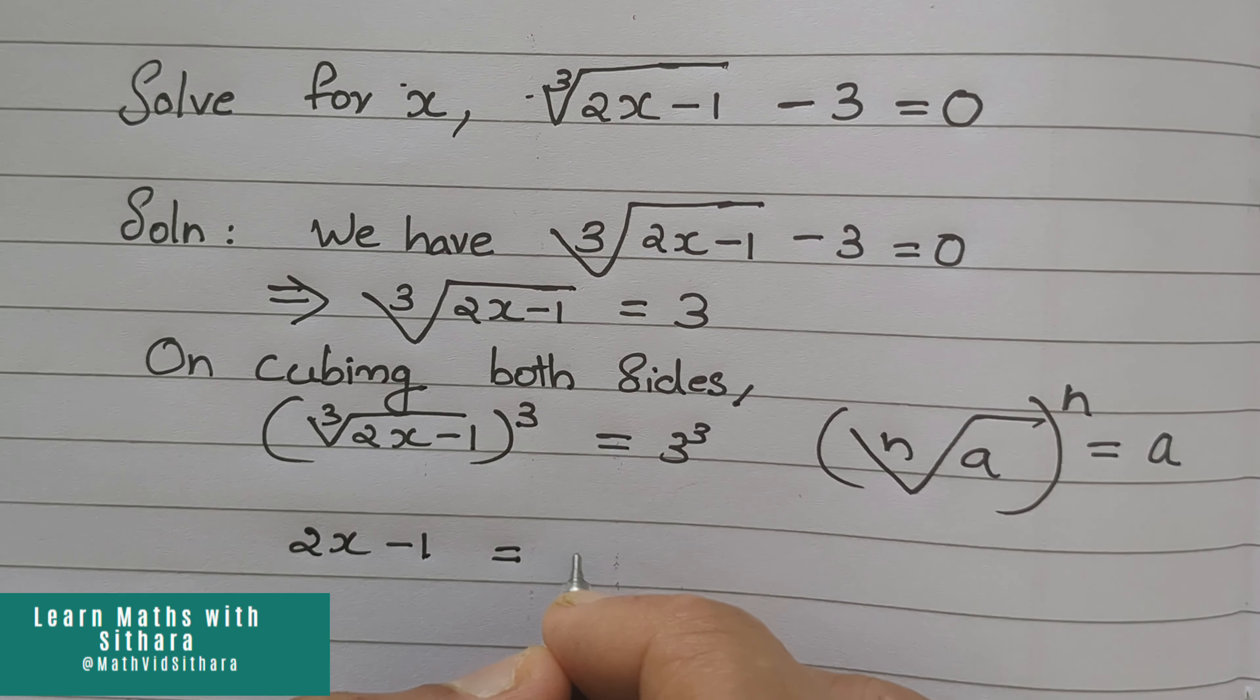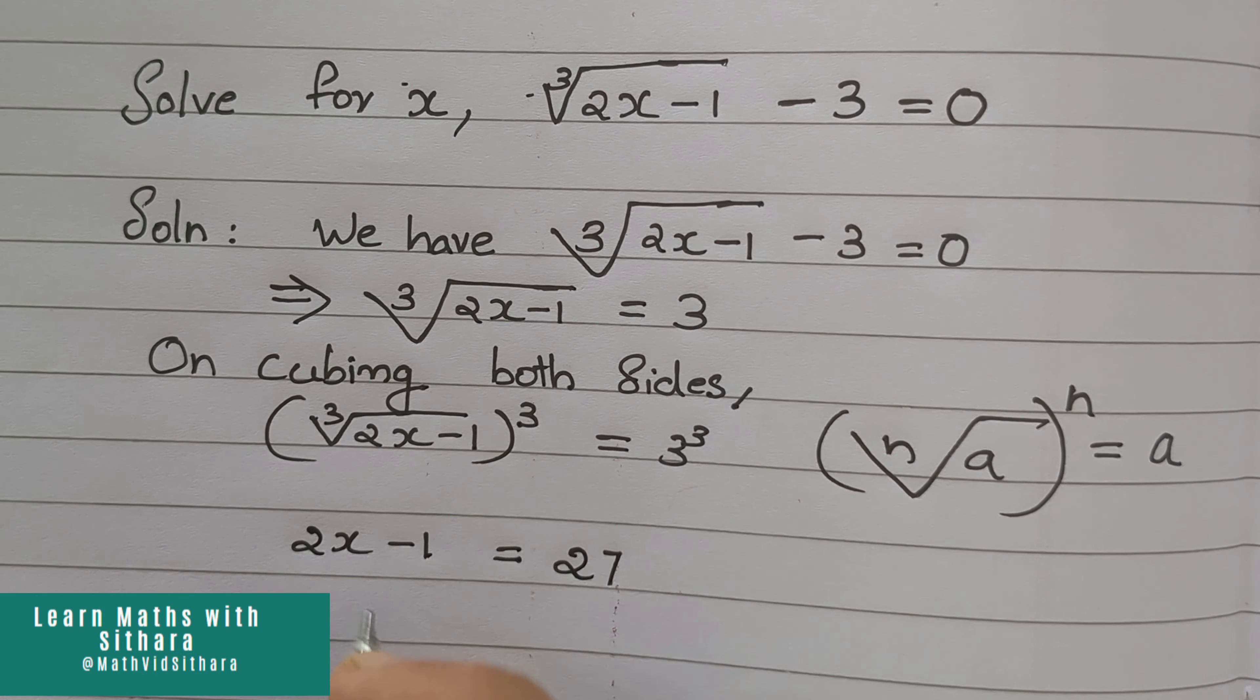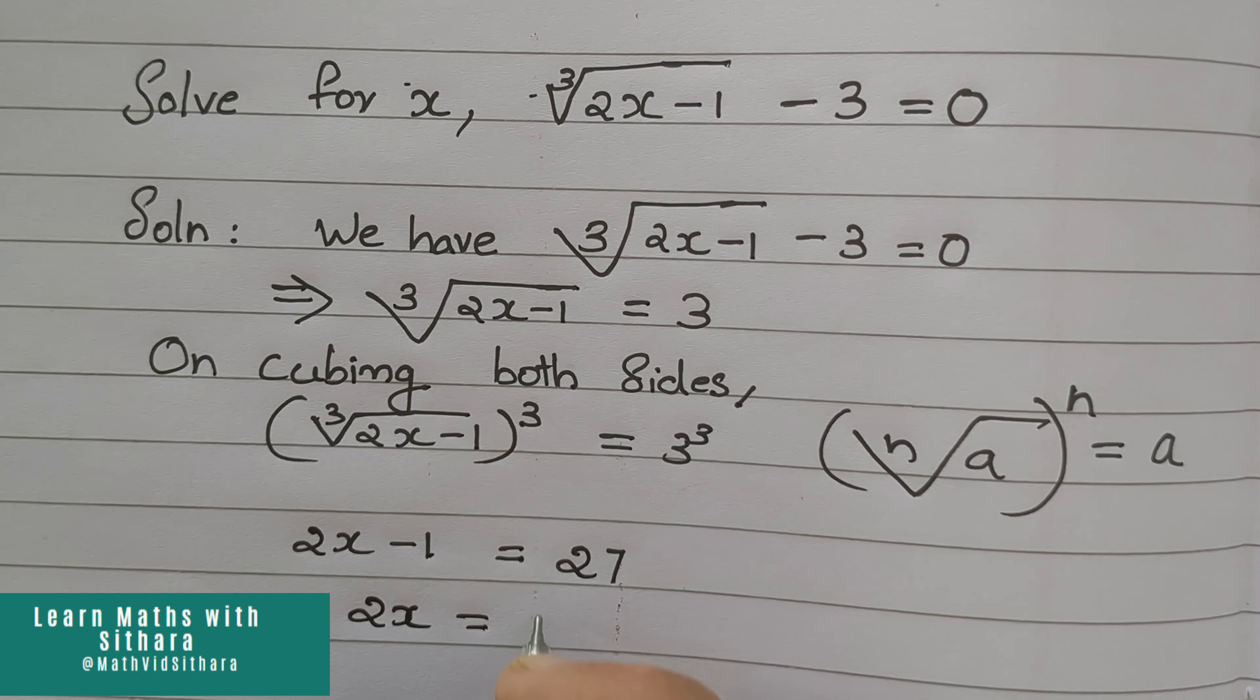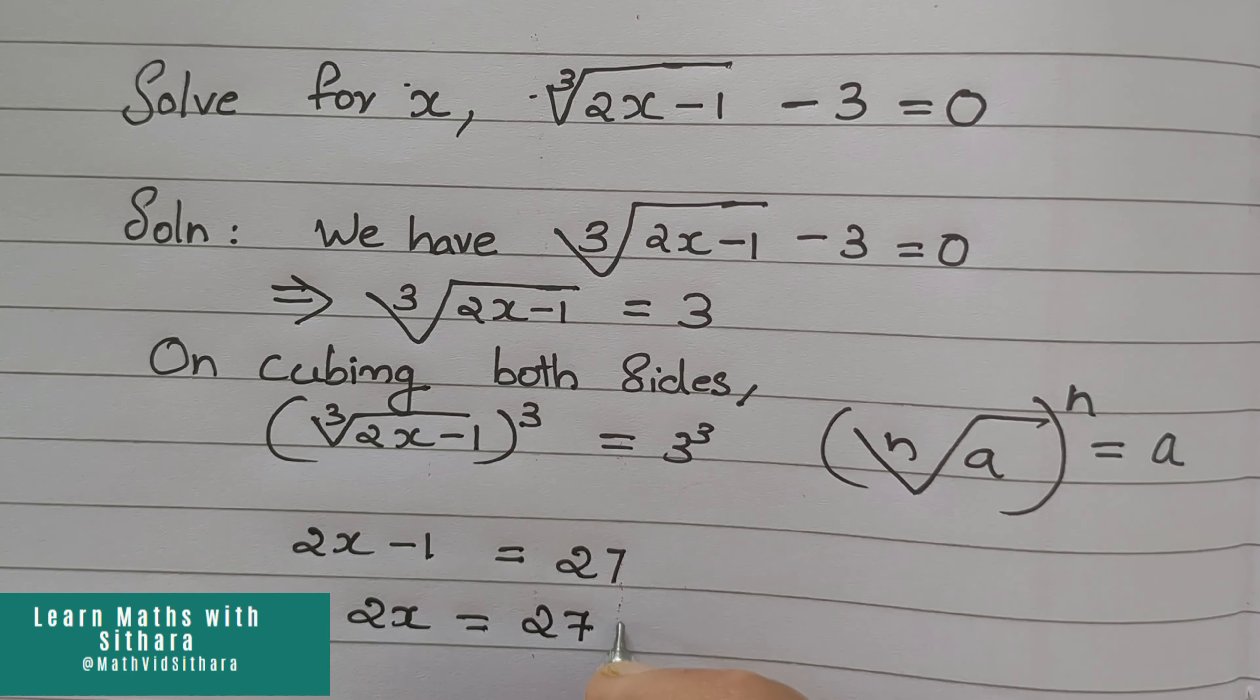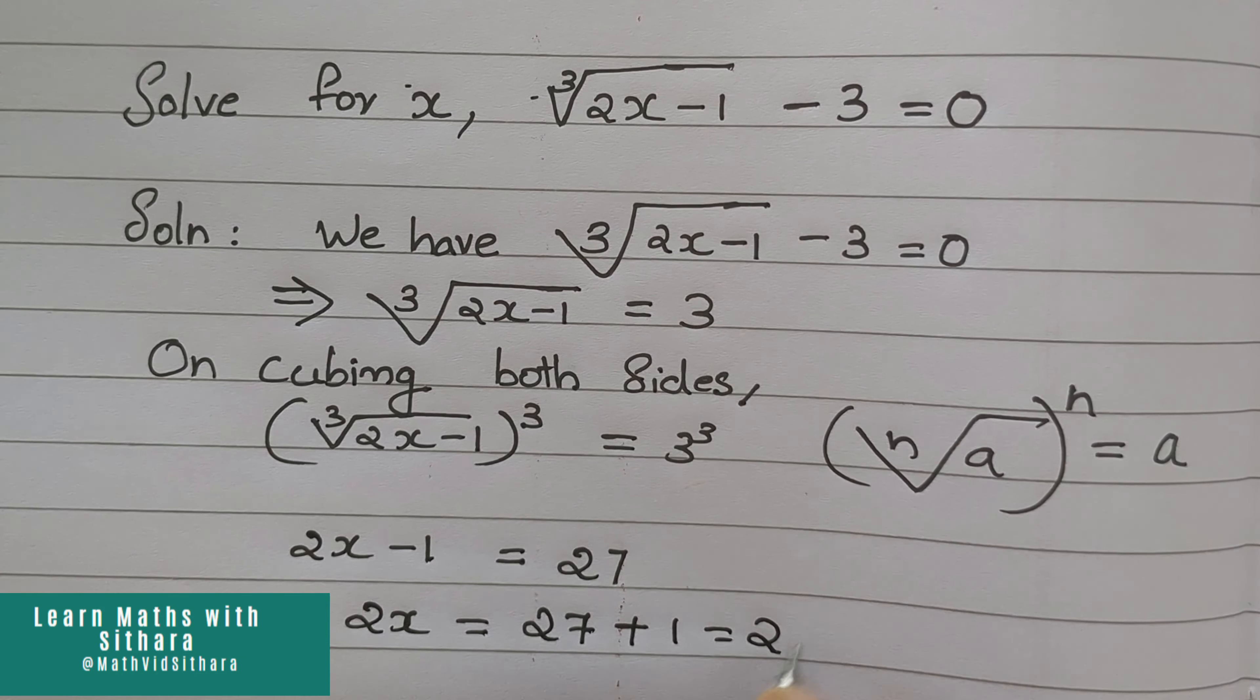3 cube is 27, so 2x equal to 27 plus 1, which is equal to 28.